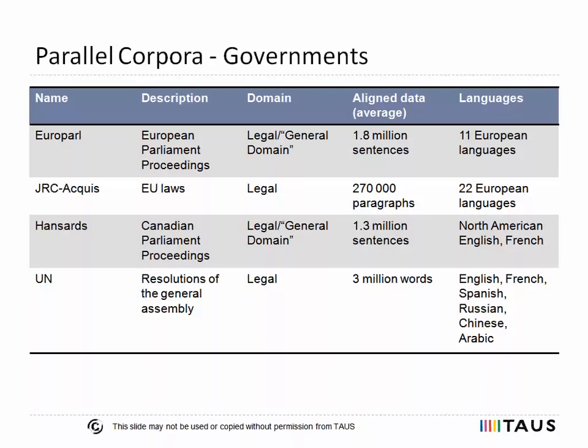The first important source of parallel corpora are multinational organizations like the European Parliament or the United Nations, and also governments of multilingual countries like Canada, Hong Kong, or Switzerland. Proceedings of the European Parliament plenary sessions and European legislation have been translated into main European languages for several years, making enough aligned data available for system training.